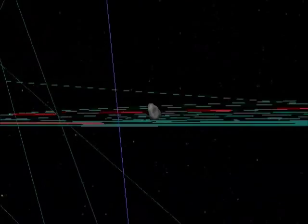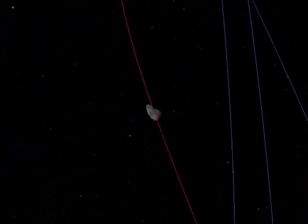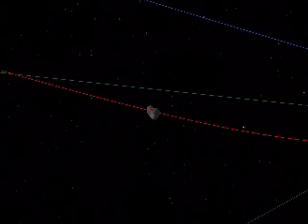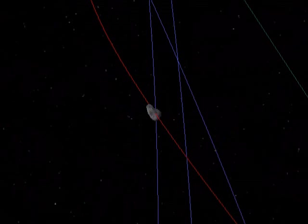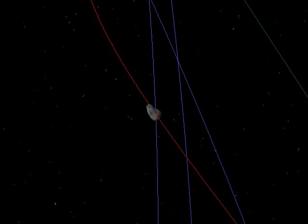Next one along is Puck. Puck is smaller, and was discovered a lot more recently by the Voyager probes in the late 80s. And there it is. Puck is again named after a character from Shakespeare, obviously, the fairy.